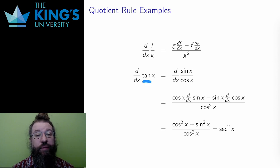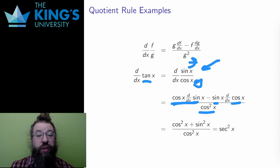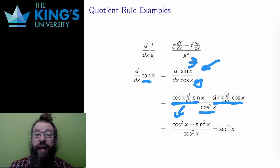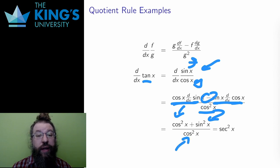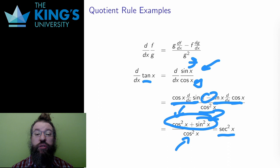Let me start with tangent. Tangent is, by definition, sine over cosine. So I have a quotient with f equals sine and g equals cosine. The derivative of f is cosine, and the derivative of cosine is negative sine. I put these into the form: g times the derivative of f minus f times the derivative of g, all over g squared. The first term is cosine times cosine, since the derivative of sine is cosine, so this is cosine squared. The second term has sine times negative sine, since the derivative of cosine is negative sine, and the negatives cancel to make an addition. The denominator is cosine squared. Using the trig identity that sine squared plus cosine squared equals one, the numerator simplifies to just one. So I have one over cosine squared, which can be written as secant squared. The rate of change of the tangent function is measured by the square of the secant function.